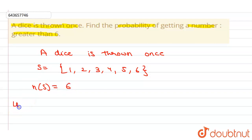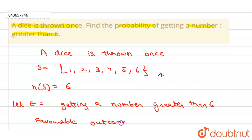Let E be event getting a number greater than 6. Now basically there are no number present in the sample space which is greater than 6. So we can say that favorable outcomes equals to 0.